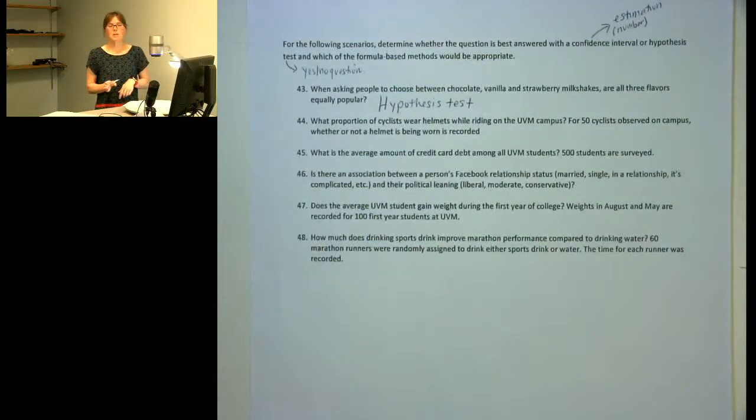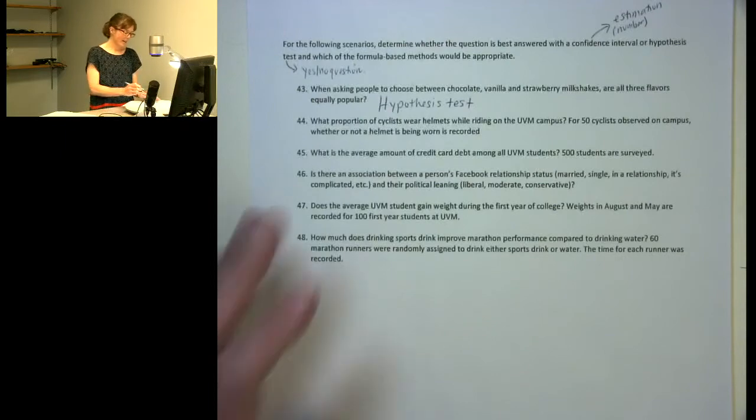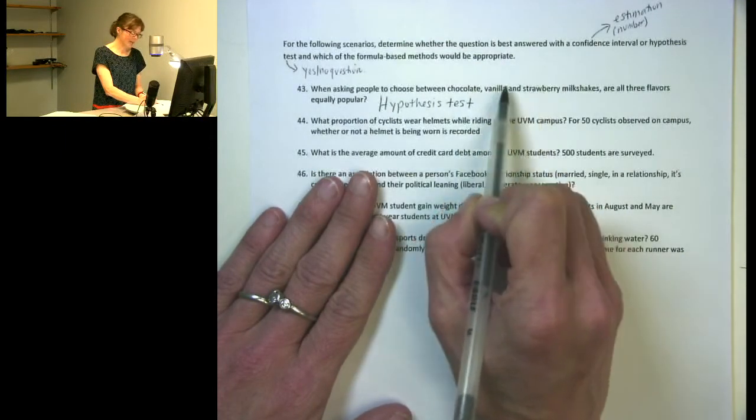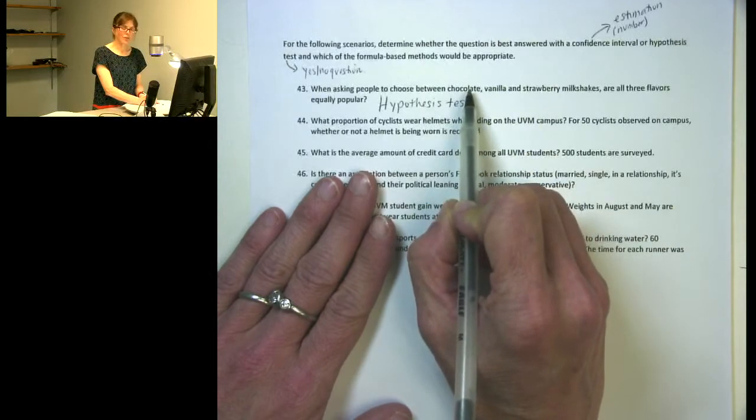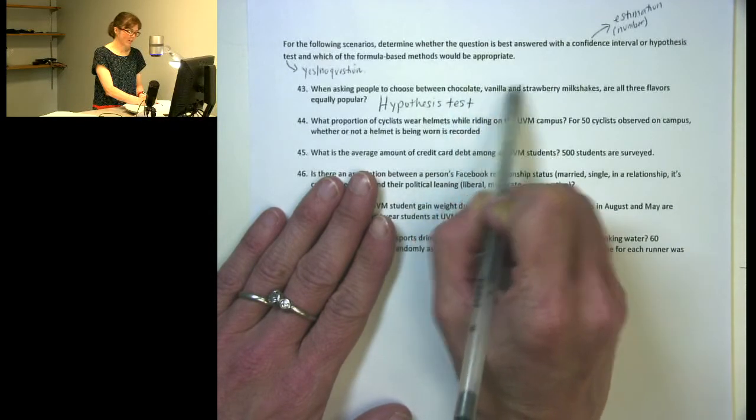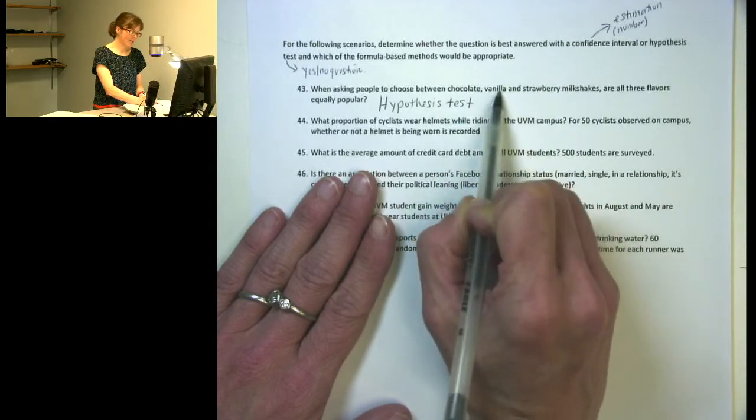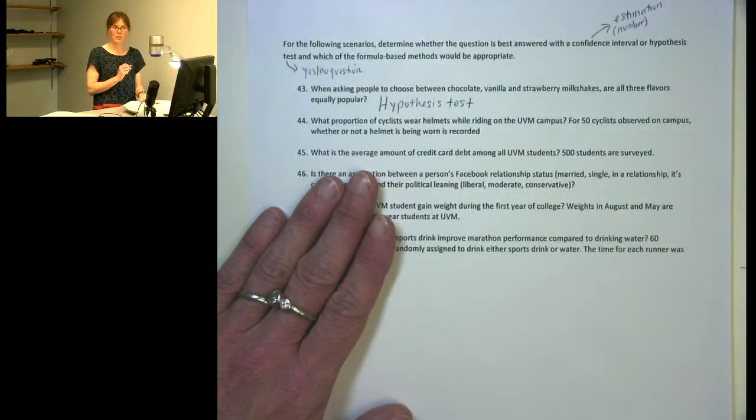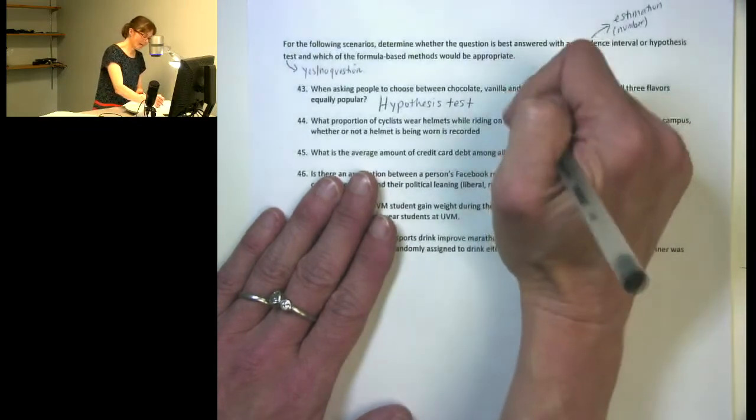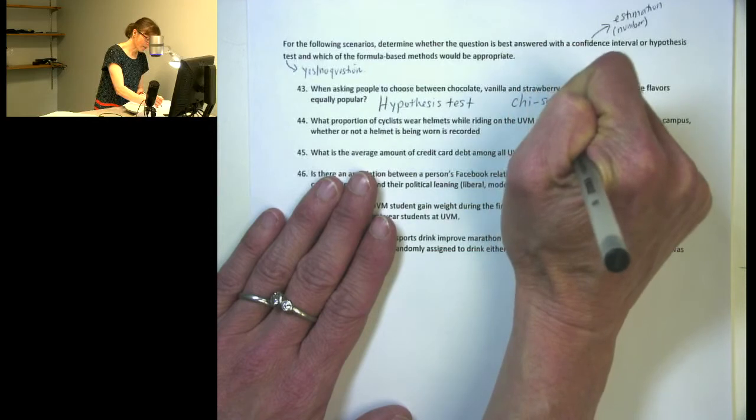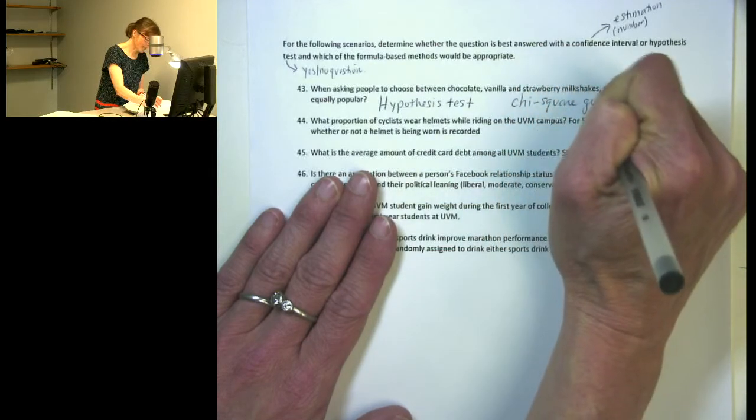Now, which of the formula-based methods I need to use depends on the type of variable that I have. And here we can see people are going to be choosing a flavor, so that's going to be a categorical variable. And there are three categories, chocolate, vanilla, and strawberry. So since we have three categories, I can't just do a simple test for a single proportion. Instead, I need to use our chi-square goodness of fit test.